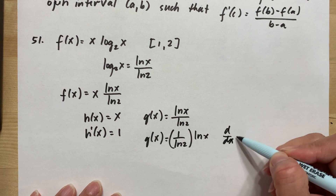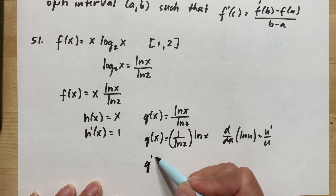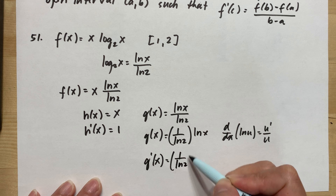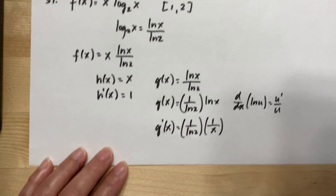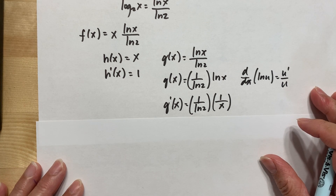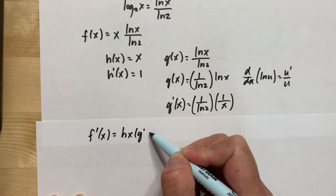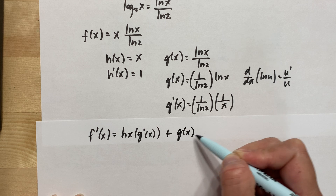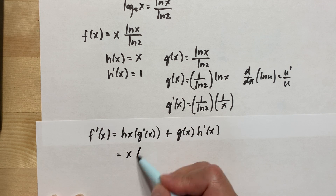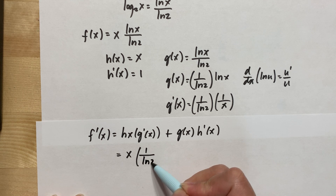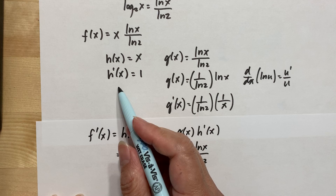Recall that the derivative of ln(u) is u′ over u. Here u = x and u′ = 1, so the derivative of ln(x) is 1/x. Therefore the derivative of G(x) is (1/ln 2)·(1/x). Now applying the product rule: f′(x) = H(x)·G′(x) + G(x)·H′(x). So we have x·(1/ln 2)·(1/x) plus (ln(x)/ln 2)·1.